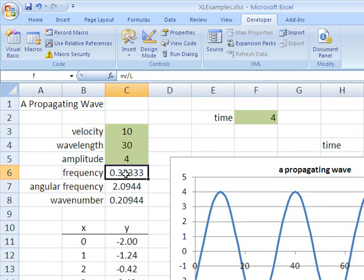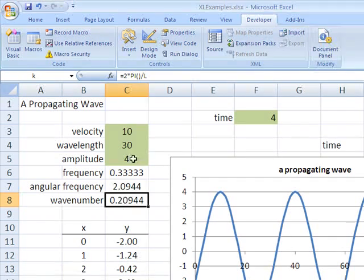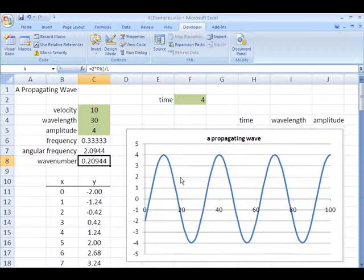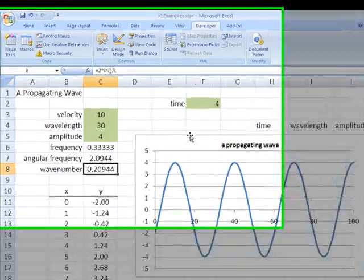Here are the formulas. The frequency is V divided by the wavelength. The angular frequency is 2 times pi times F, F being the frequency. By the way, you don't have to type in pi as 3.14. You can actually just type pi with a set of closed parentheses and it will take a very precise value of pi and use it in the formula. And wave number is 2 pi divided by L. So those are the formulas. Everything is set up except for the VBA controls.